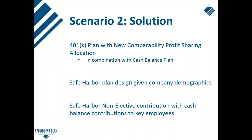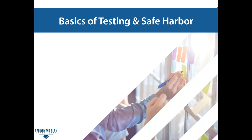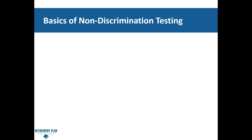Moving forward with scenario two on the solution — what we came up with was a 401k plan with new comparability profit sharing allocation, and then introducing the idea of a cash balance plan on top of that. For partners making half a million dollars or more, this allows them the option to contribute even higher than the $56,000 401k limit. Depending on the age of the owners, they could put away nearly $200,000 or more. With this specific plan, we're going to offer a safe harbor non-elective contribution — that works best when they know they want to contribute profit sharing every year and offer a cash balance plan to key employees.